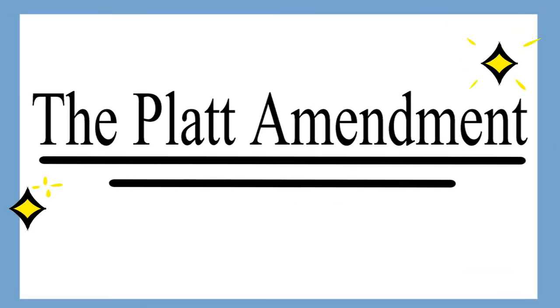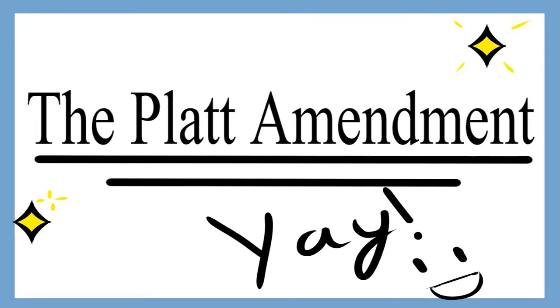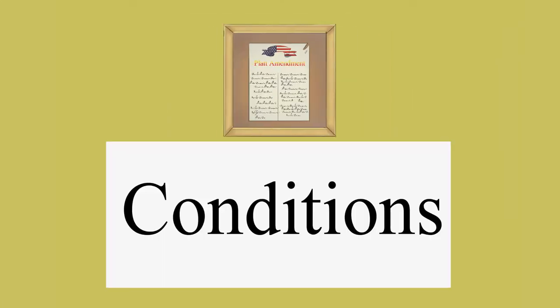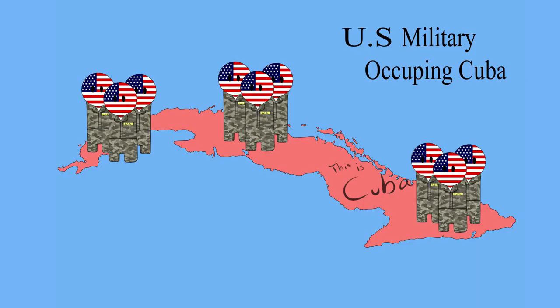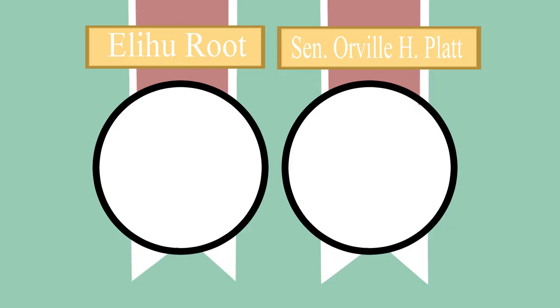Today we're going to talk about the Platt Amendment. The Platt Amendment was an amendment that set the conditions for the United States military occupying Cuba, and was passed at the end of the Spanish-American War of 1898.